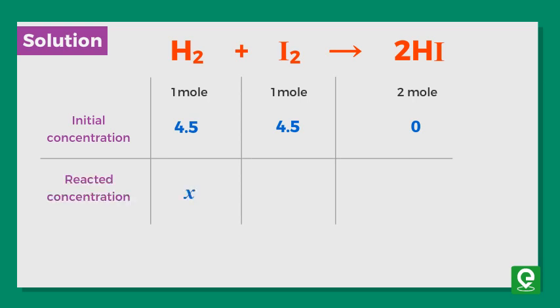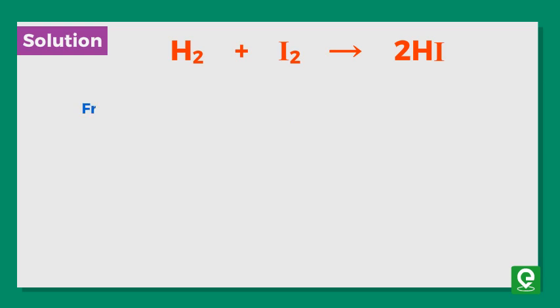Let the reacted concentration of H2 be x. Therefore, x moles of I2 is used to create 2x moles of HI. As given in the question, at equilibrium 3 moles of HI is present, so we can equate 2x with 3.